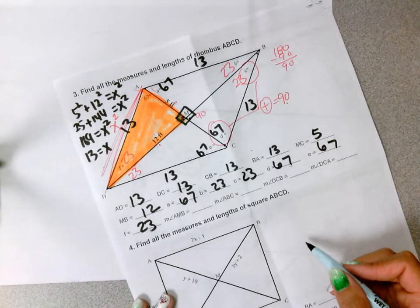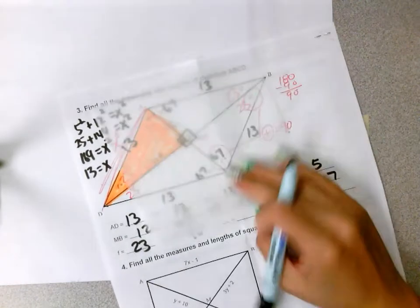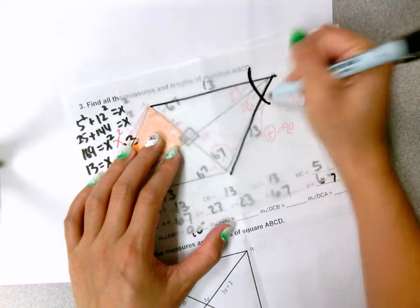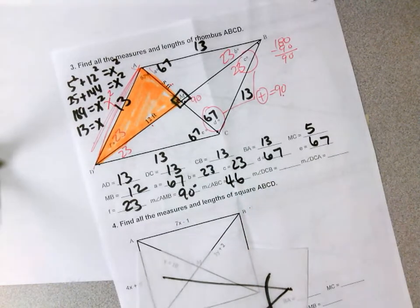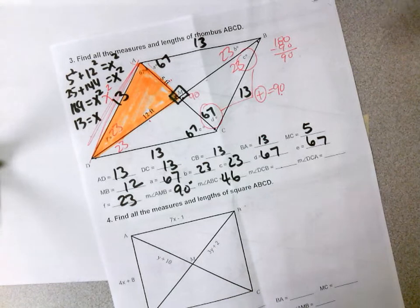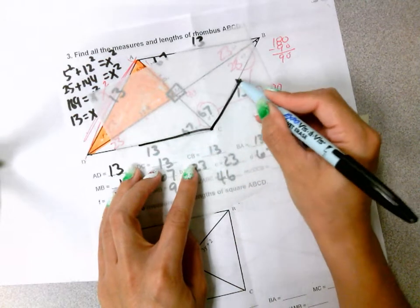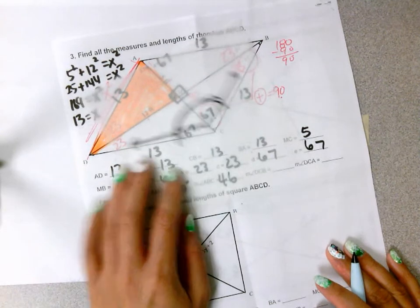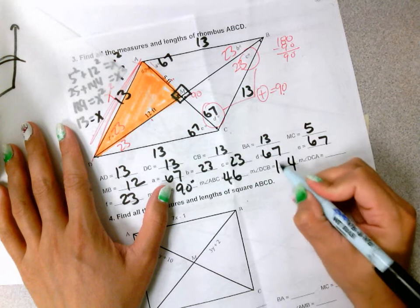Alright, A, M, B is the next one. A, M, B is in the middle, so that's 90 degree. Next one is A, B, and C, so here is your A, your B, and your C, which is this entire angle right here. It's composed of 23 and 23, so you have 46 as your answer, and then following after that, I have D, C, B, D, C, B, from here to here. So, it is this big angle, which is composed of 67 and 67, you have 67, 7 plus 7 is 14, carry the 1 is 134.